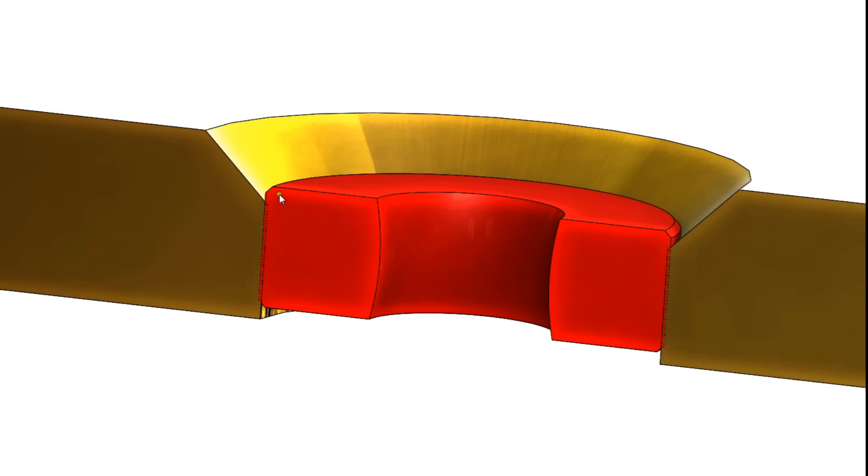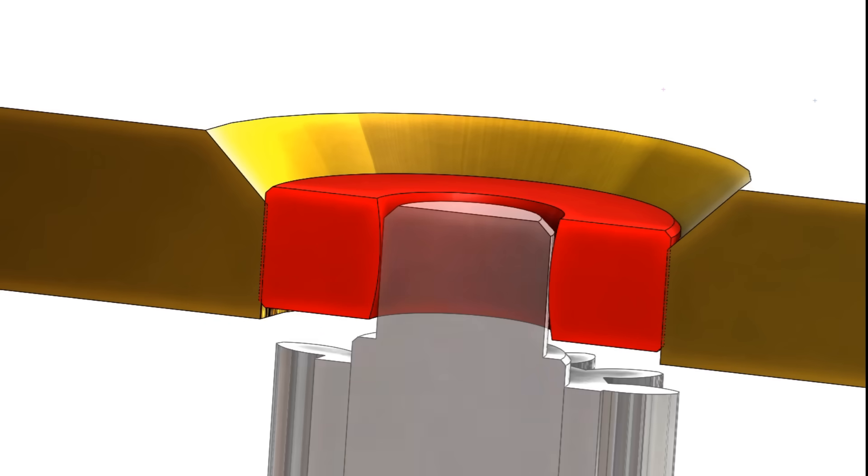That slight overlap in dimensions creates an interference fit that serves to hold the jewel in place. The hold is such that the jewel position is stable during normal operation of the watch.